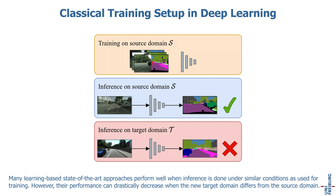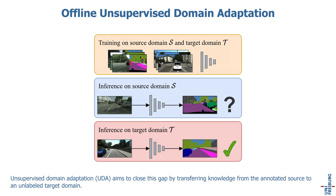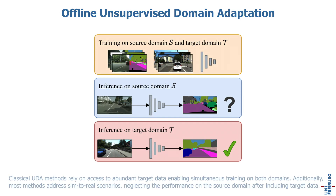Many learning-based, state-of-the-art approaches perform well when inference is done under similar conditions as used for training. However, their performance can drastically decrease when the new target domain differs from the source domain. Unsupervised domain adaptation aims to close this gap by transferring knowledge from the annotated source to an unlabeled target domain. Classical UDA methods rely on access to batched target data, enabling simultaneous training on both domains. Additionally, most methods address sim-to-real scenarios, neglecting the performance on the source domain after including target data.